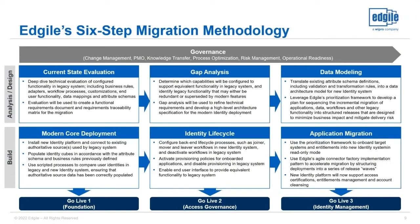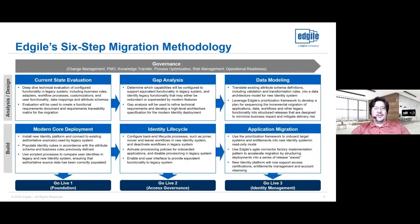Agile has a six-step migration methodology used countless times to help customers move from a legacy solution to a modern identity platform. It's broken down into two phases: the analysis and design phase, and the actual building phase. It's critically important that you complete the analysis and design before building — you cannot just start building and hope things work. You need to properly plan and figure out what you need to build before you build it.